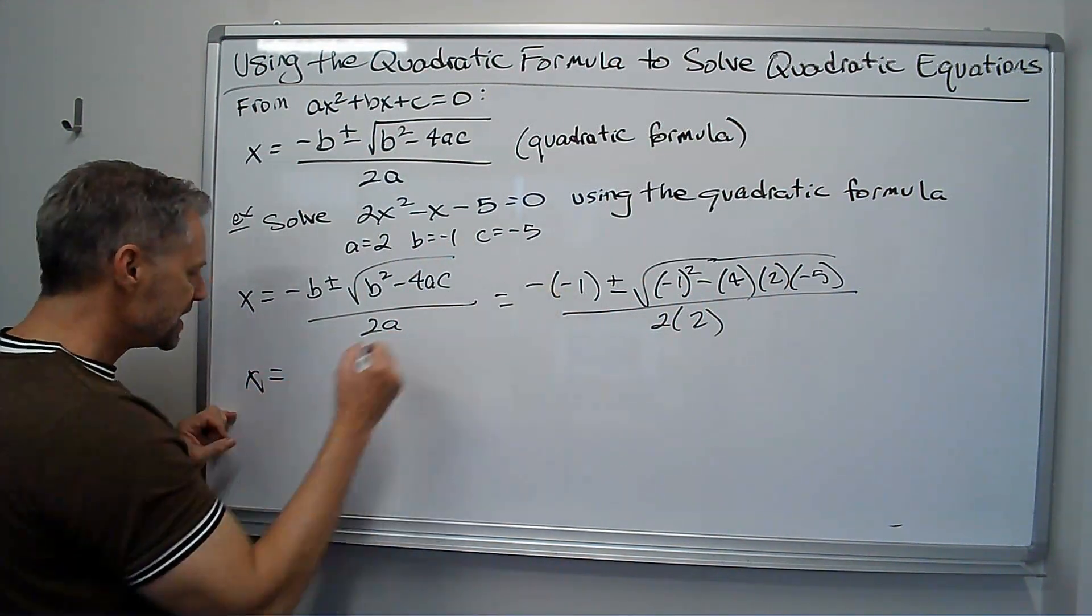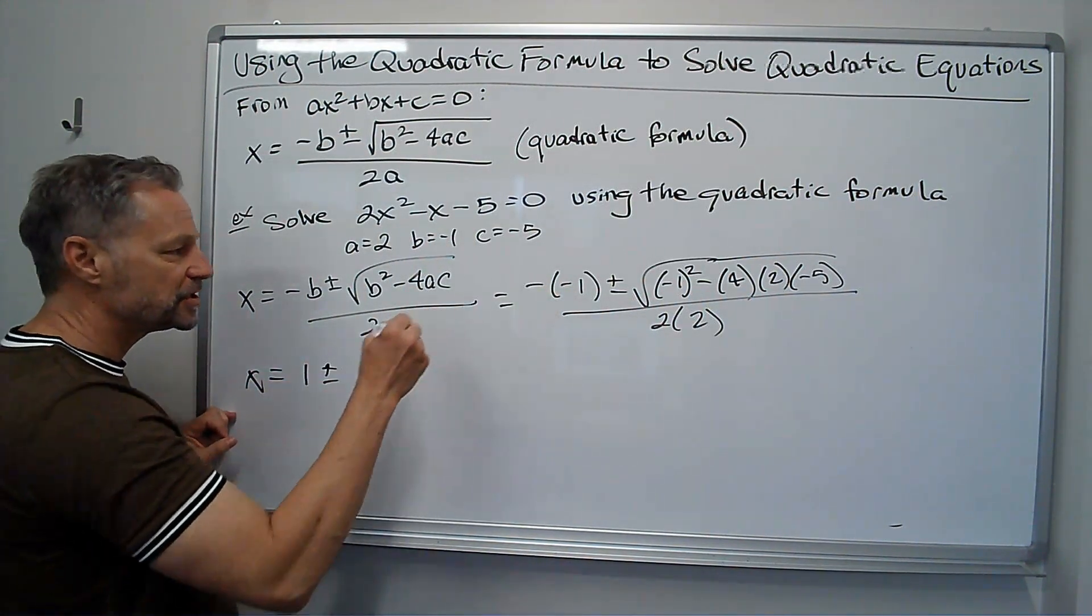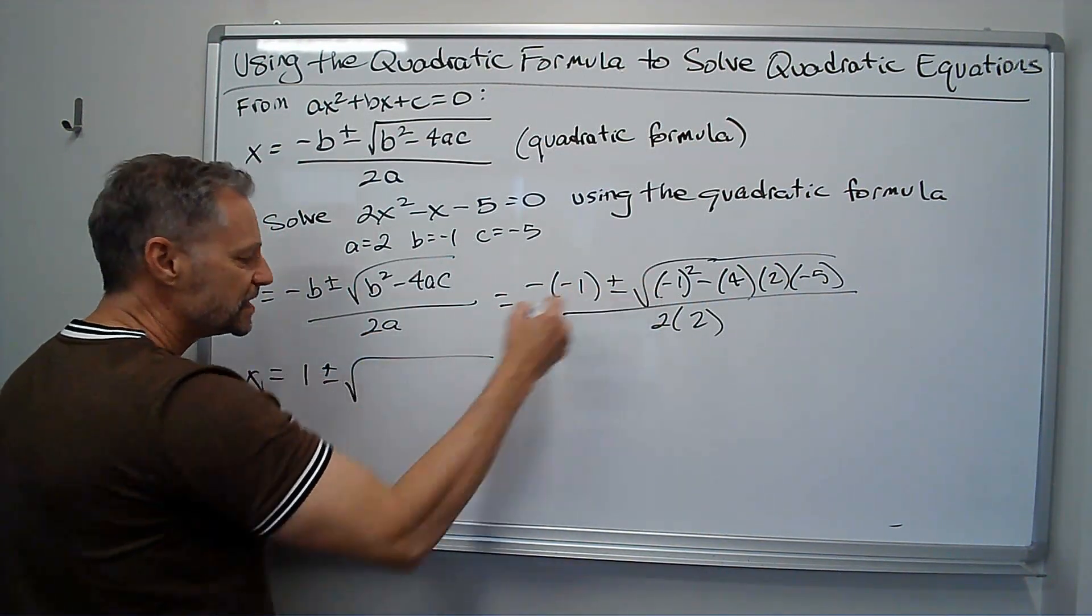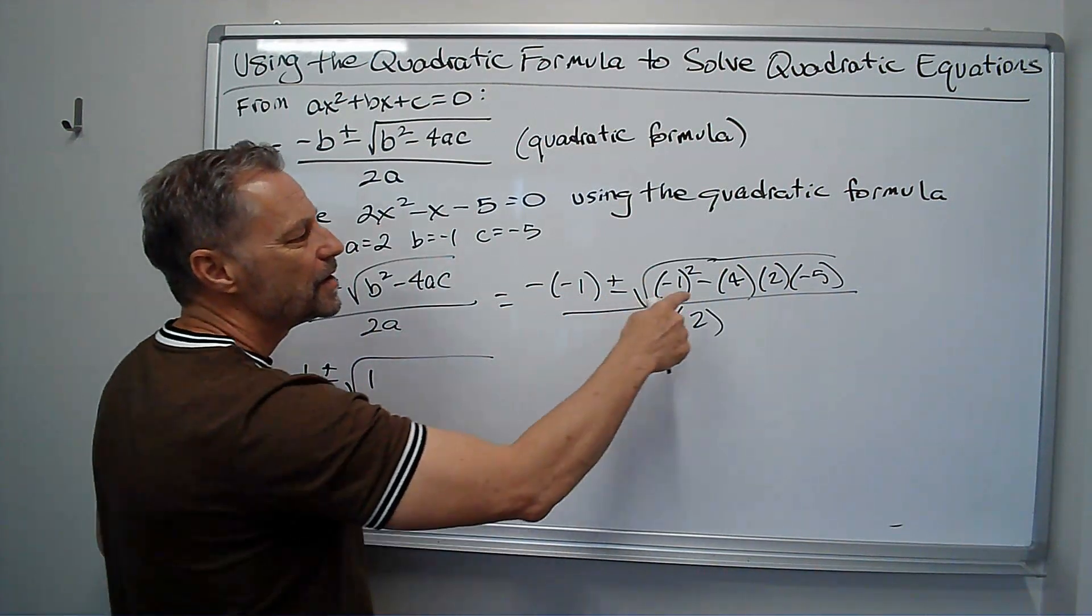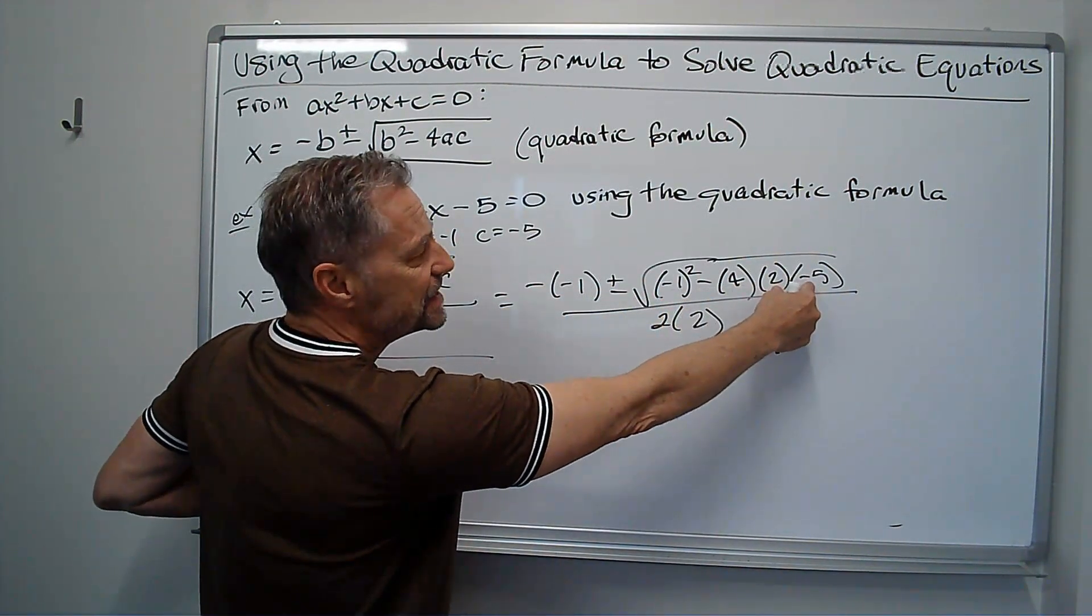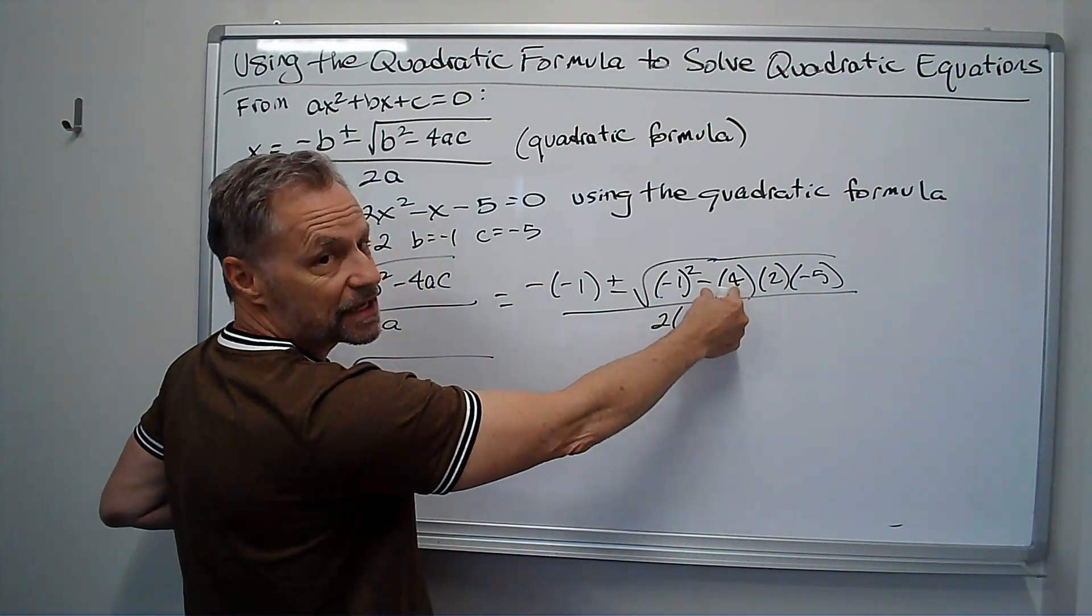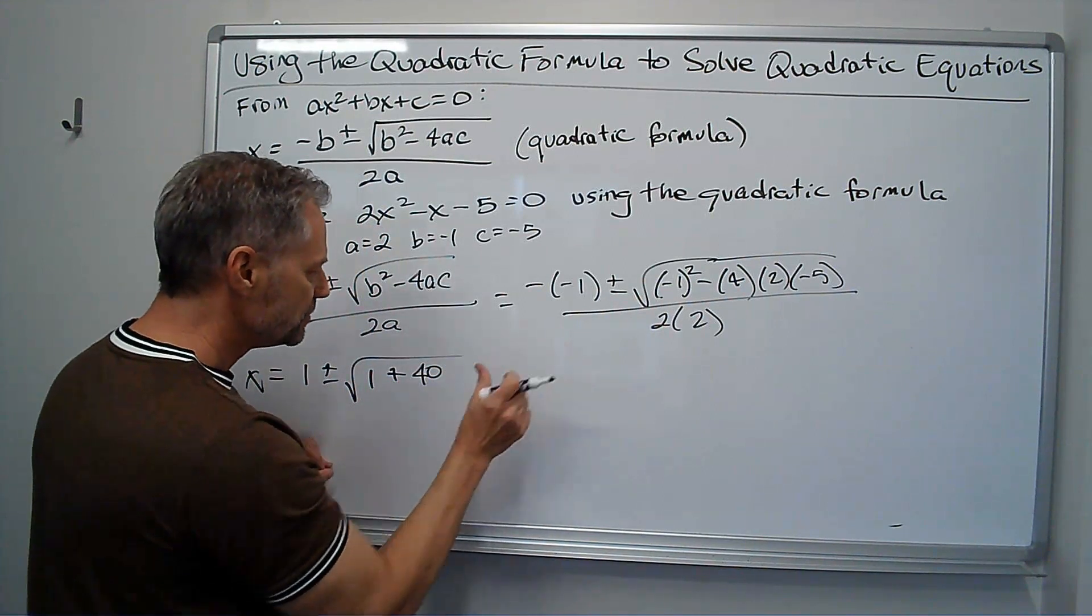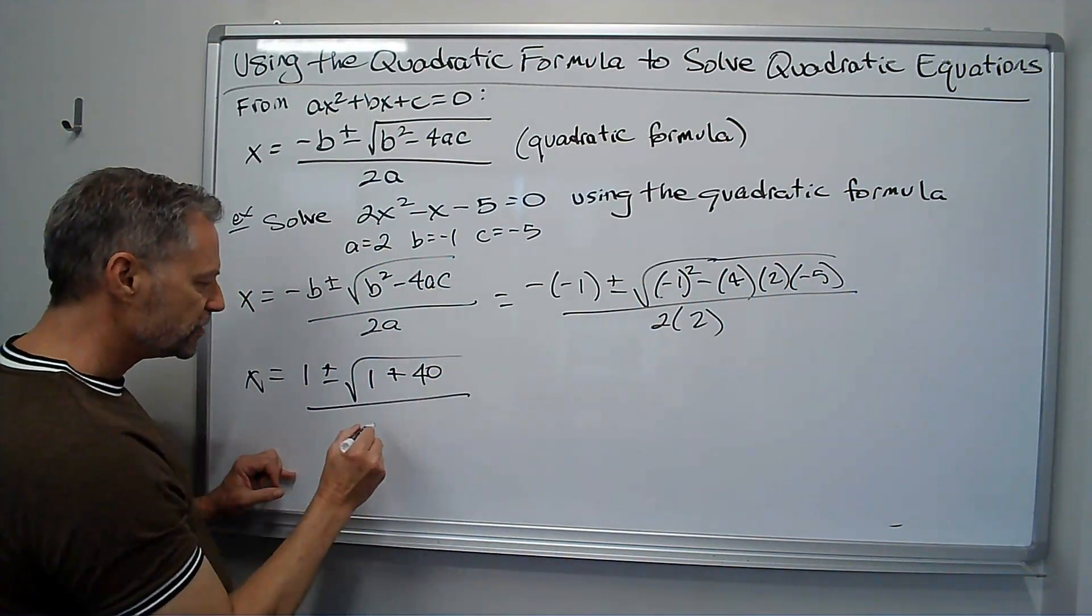x equals, well, the opposite of negative 1 is positive 1, and then plus or minus. Well, it's going to be the square root, negative 1 squared is 1. Notice negative, well, negative 5 times 2 is negative 10. Negative 10 times negative 4 is positive 40. So be careful with your signs there. It doesn't mean that far. All over 4.